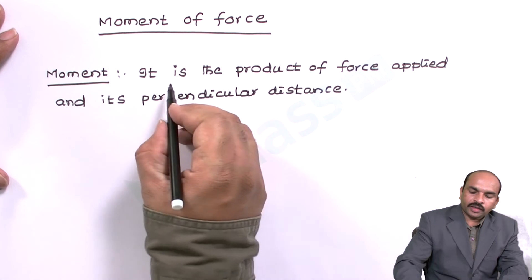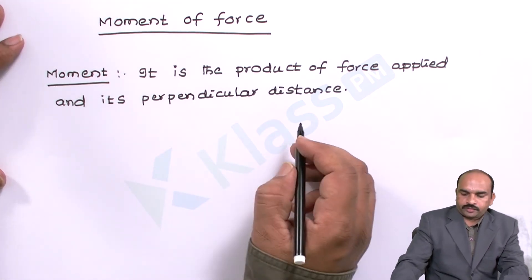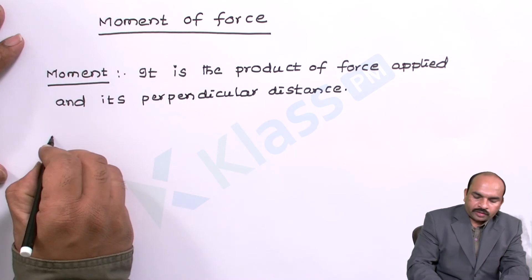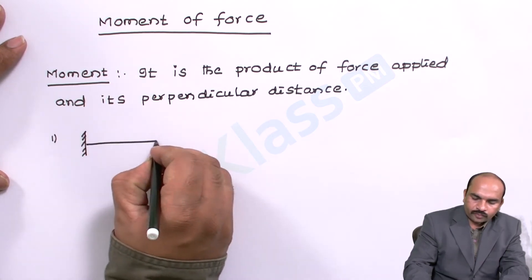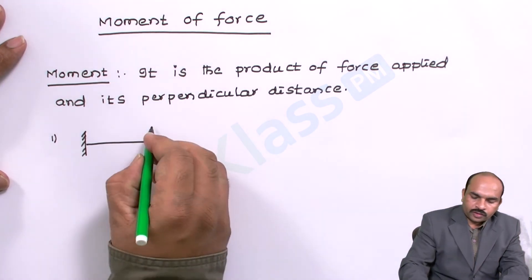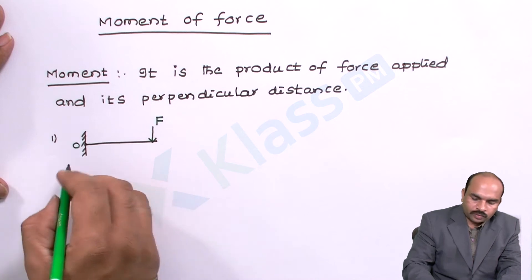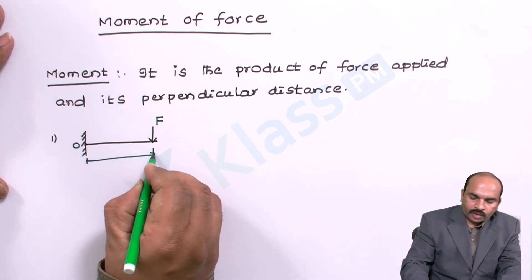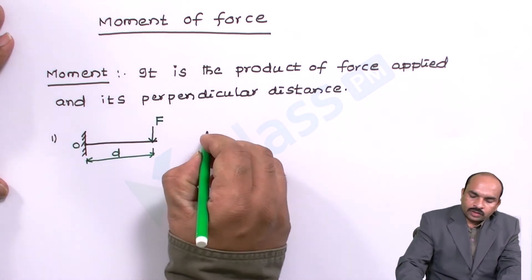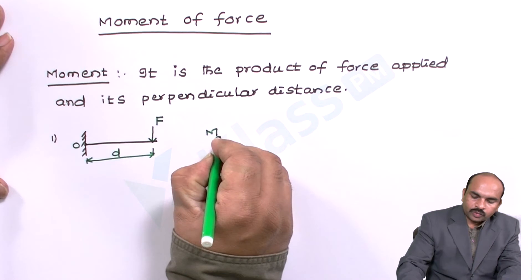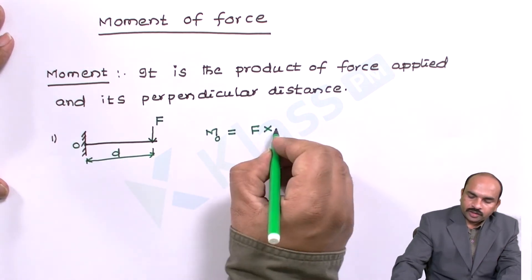Moment can be defined as it is the product of force applied and its perpendicular distance. Let us see the moment with the help of a simple diagram. Let us take a force F acting on a body. Let this point be O and its perpendicular distance be D. The moment M with respect to point O is equal to force applied into its perpendicular distance D.